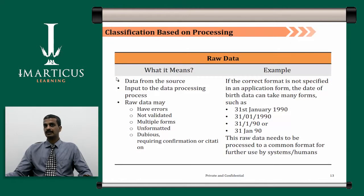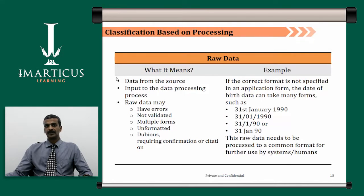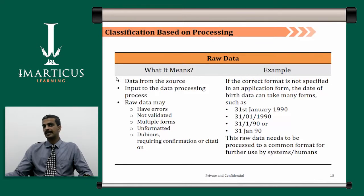We also classify data based on the kind of processing required. Most of the time transactional systems capture data in raw format, and this data has to be converted into a structured format so it can be easily analyzed. Raw data may have errors, not be validated, the same data can be repeated several times, it can have an undefined format, be dubious, or require confirmation. Your raw data could be in any of these forms, which definitely needs cleansing — only then, when used in analytics, will you be able to draw meaningful inferences. For example, if a correct format is not specified in an application form, date of birth data can take many forms: 31st January 1990, 31/01/1990, 31/1/90, or 31st Jan 90.